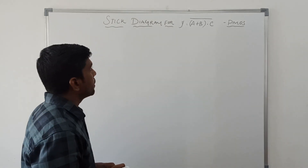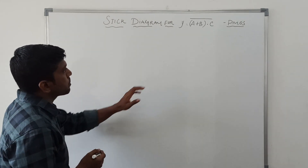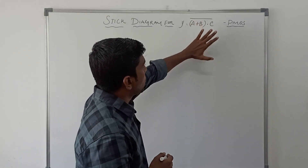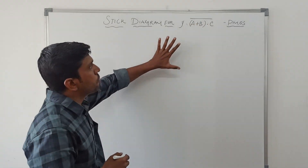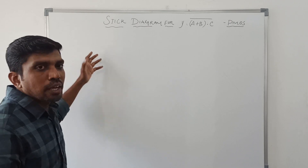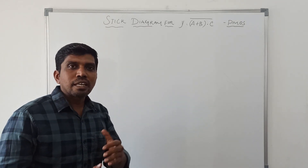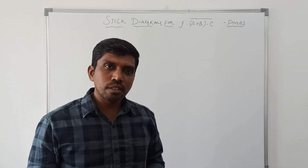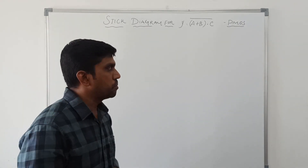The boolean expression is y equal to A plus B dot C, whole. Before that, let me explain what are the graphical representations used in the stick diagram.